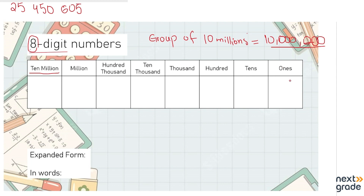Let's begin. The first columns are ones, tens, and hundreds, so let's place them. We have five at ones. At tens we have zero, so we put zero there. Then we have six at hundreds. At thousands, the value is zero, so we put zero. At ten thousands we have five — that's fifty thousand. At hundred thousands we have four. At millions we have five, and at ten millions we have two.